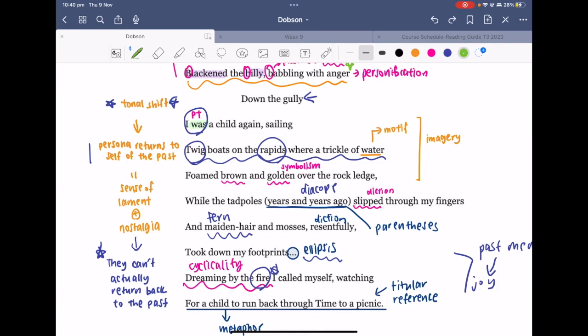More importantly, what we can see here in the short truncated or indented line "in down the gully" is a tonal shift. I've written it down here for you. The imagery of twig boats on the rapids takes us back to this idea of youthful innocence.